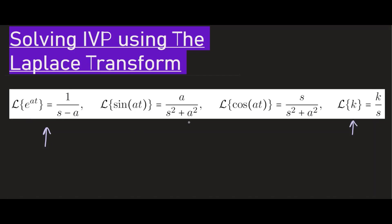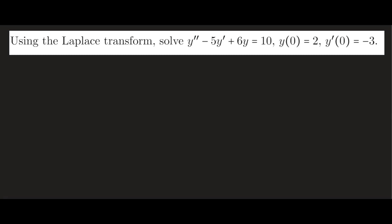Now knowing that, let's try our first example. We're going to use the Laplace transform to find the solution to this differential equation. It's a constant coefficient, non-homogeneous equation with two initial conditions. We're going to take the Laplace transform on both sides, giving us the Laplace transform of y double prime minus 5y prime plus 6y equals the Laplace transform of 10.